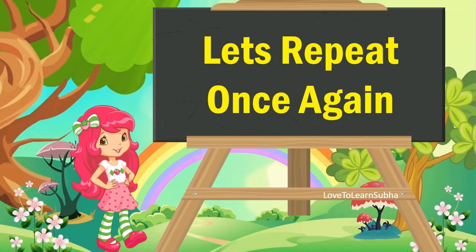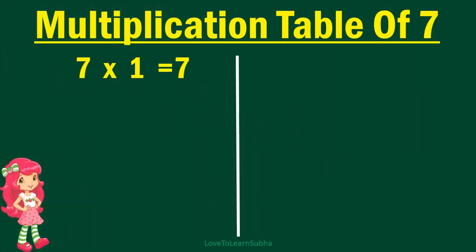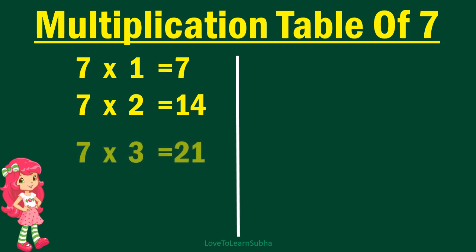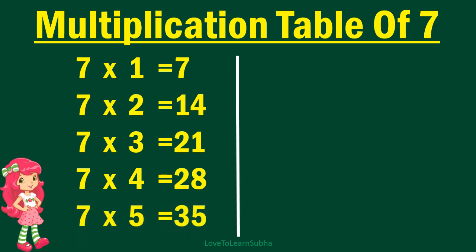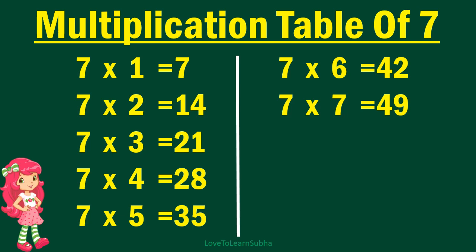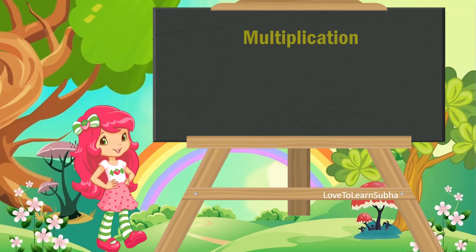Now, let's repeat it once again. 7 ones are 7, 7 twos are 14, 7 threes are 21, 7 fours are 28, 7 fives are 35, 7 sixes are 42, 7 sevens are 49, 7 eights are 56, 7 nines are 63, 7 tens are 70.